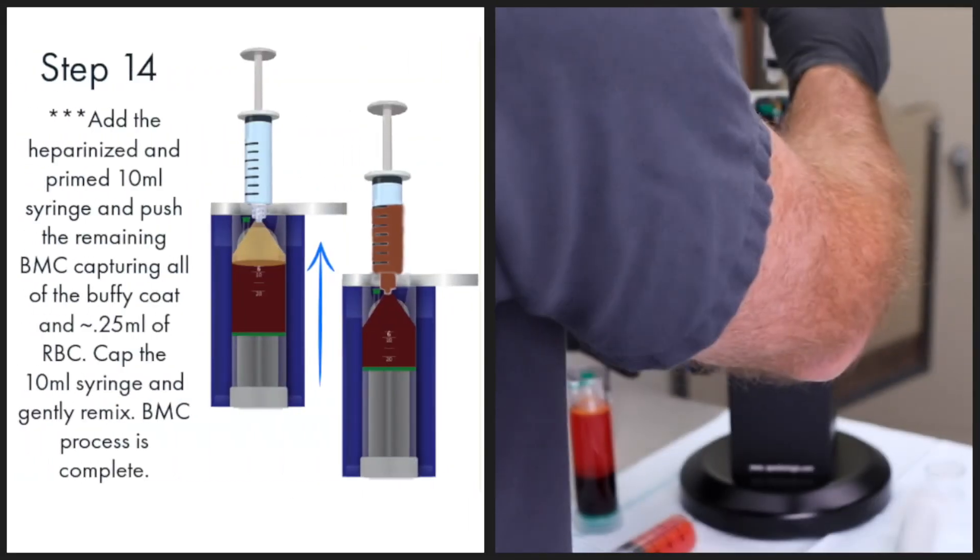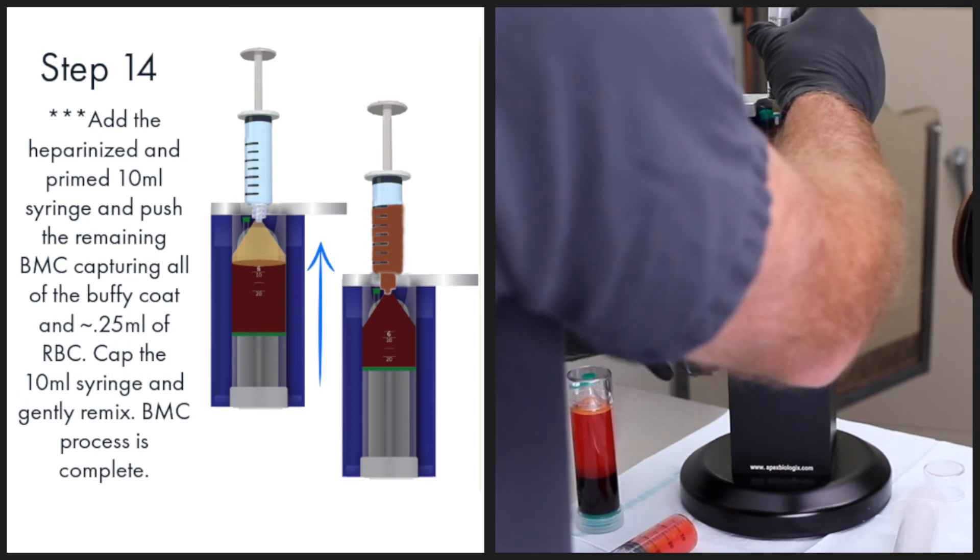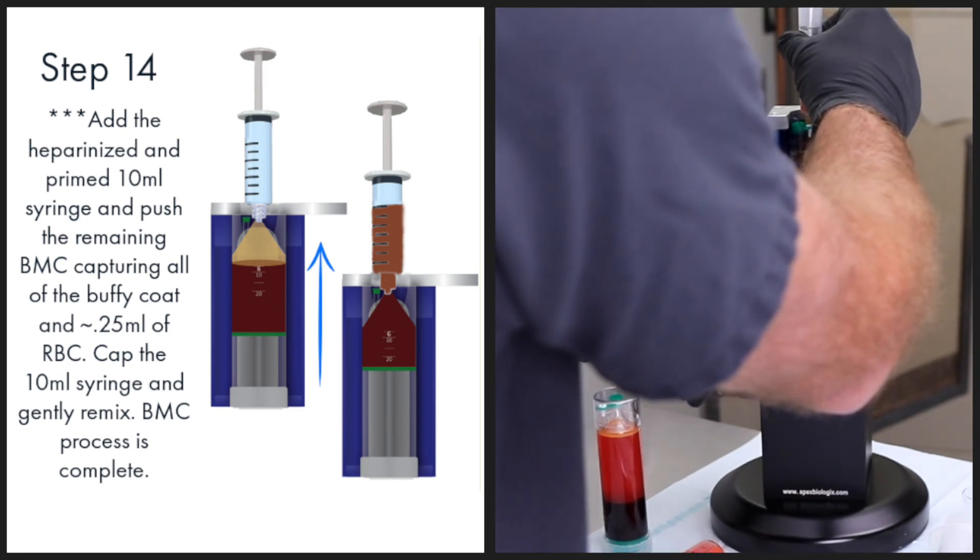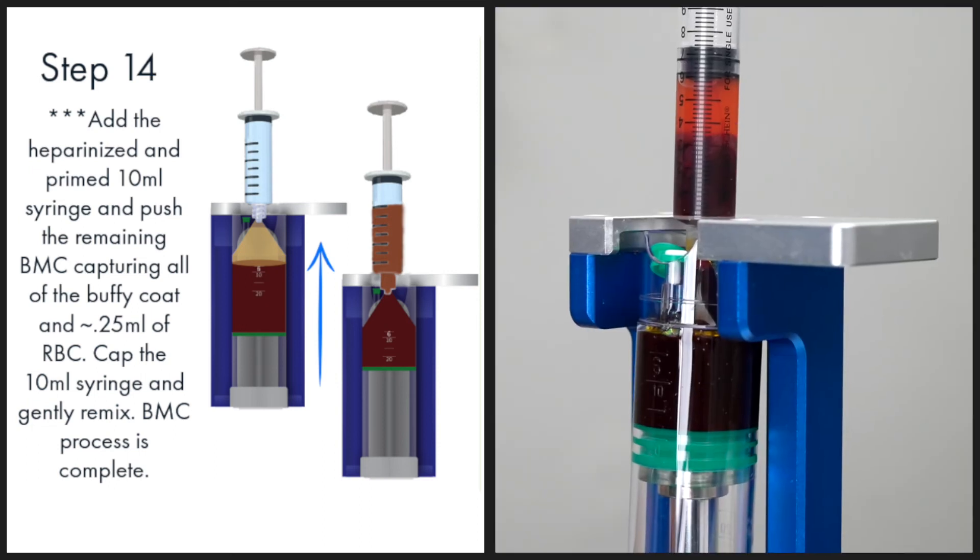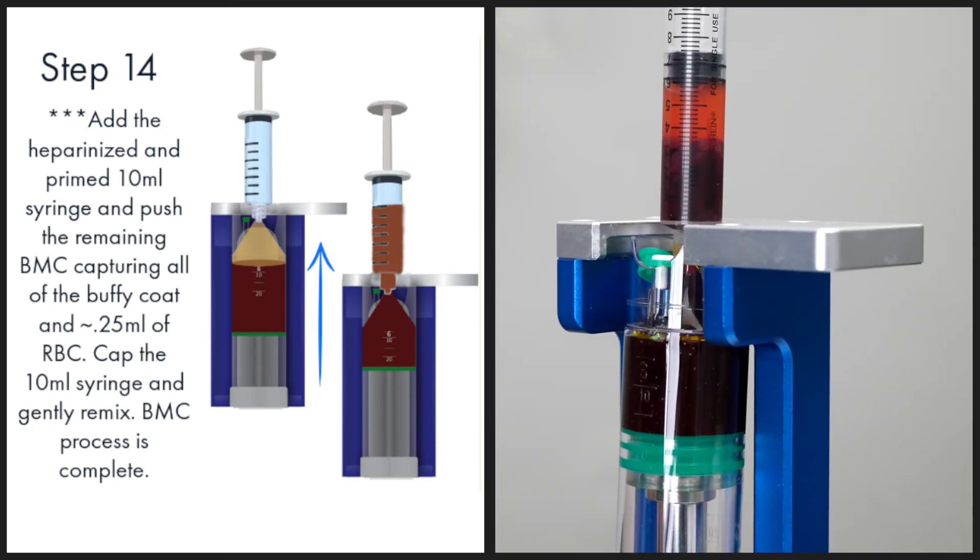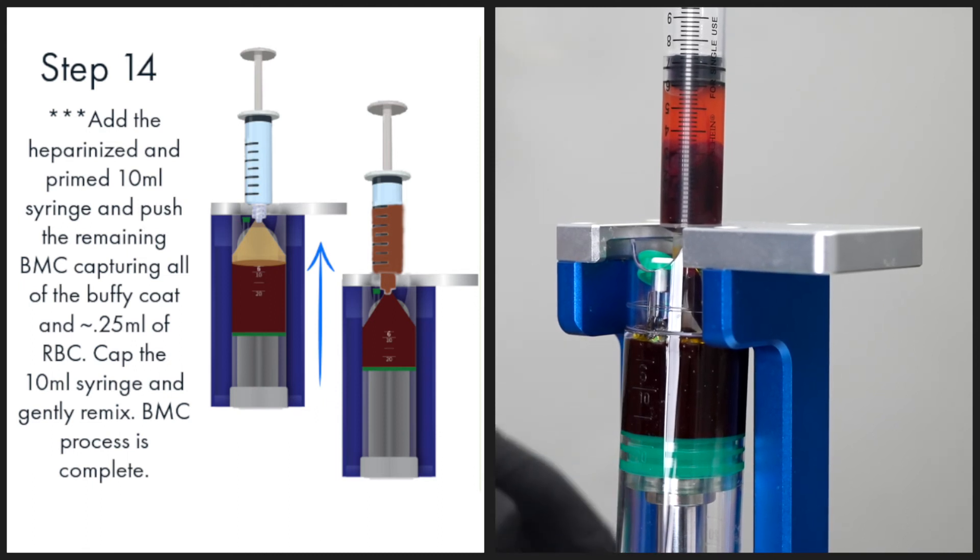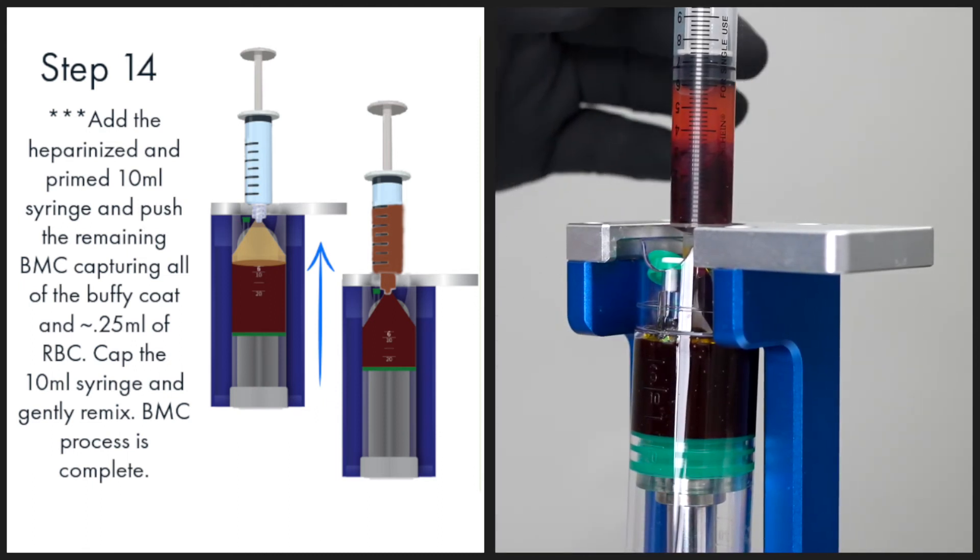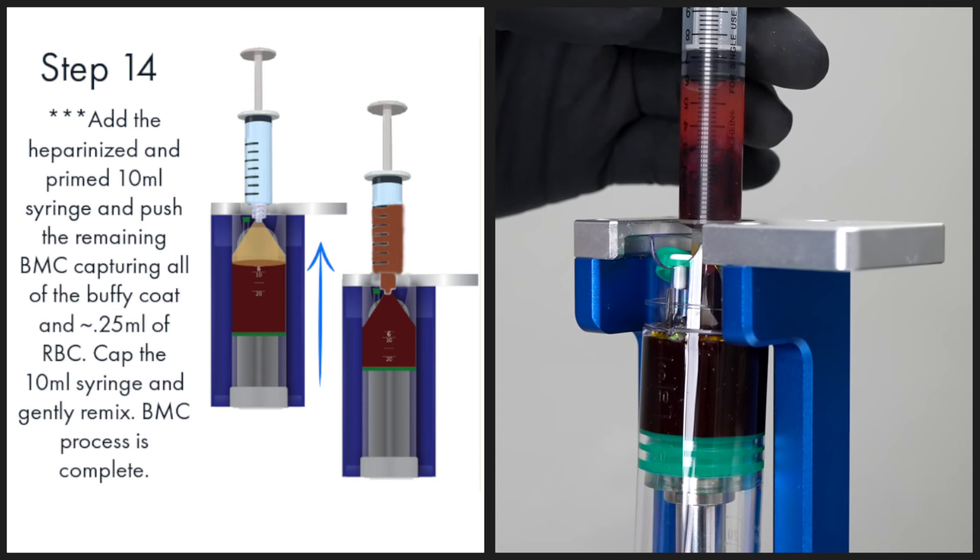Add heparinized and primed 10 milliliter syringe and push the remaining bone marrow concentrate, capturing all of the buffy coat and about 0.25 milliliters of red blood cells. Cap the 10 milliliter syringe and gently remix. The bone marrow concentrate process is complete.